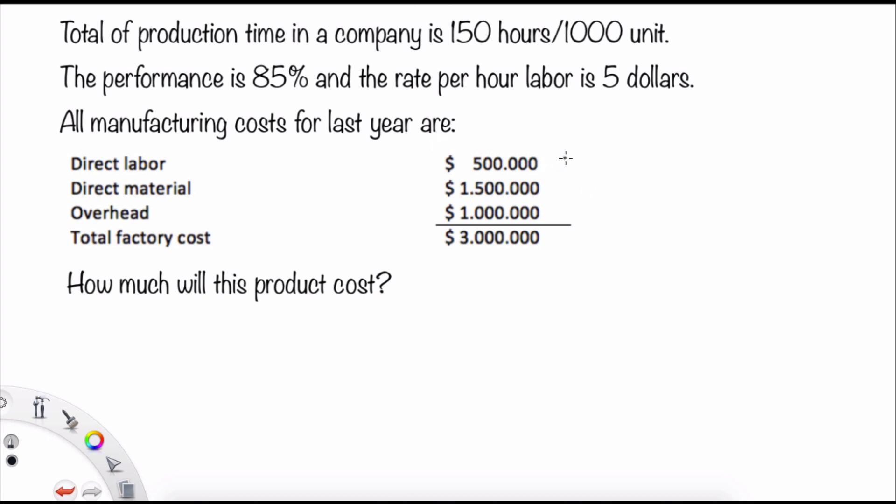the direct labor is $500,000. For the direct material is $1.5 million and for the overhead is $1 million. The total factory cost will be $3 million. How much will this product cost?